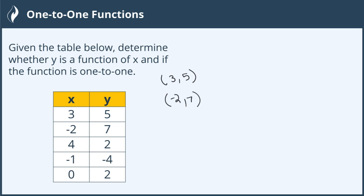Now our next ordered pair would be 4 to 2. So far so good. Every one of these is unique. 3, negative 2, and 4 is unique. 5, 7, and 2 is unique. And then our next ordered pair would be negative 1, negative 4. Again, we still have everything is unique. There isn't anything that's the same on either side, even the x or the y. Now, our last ordered pair is 0, 2.